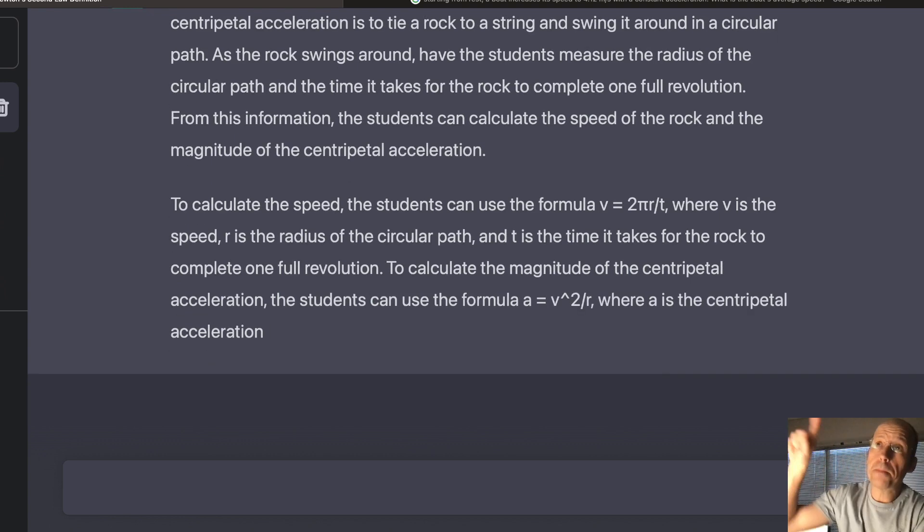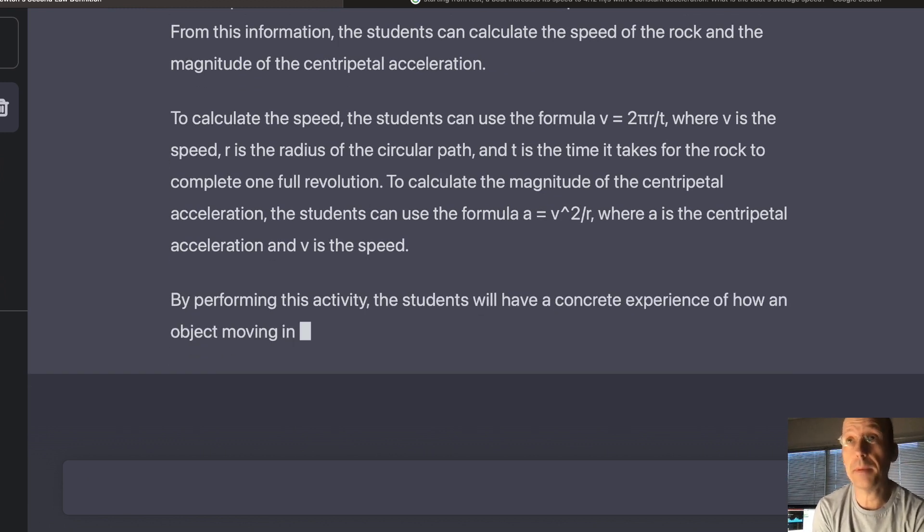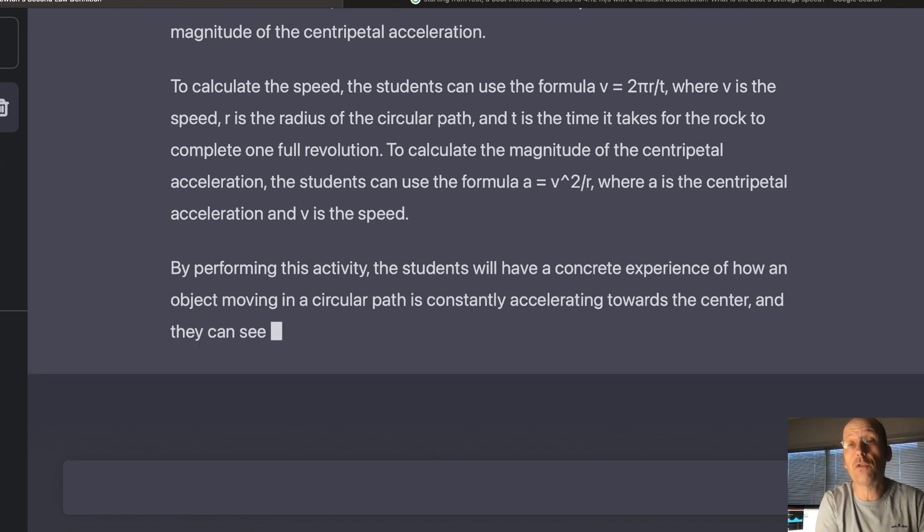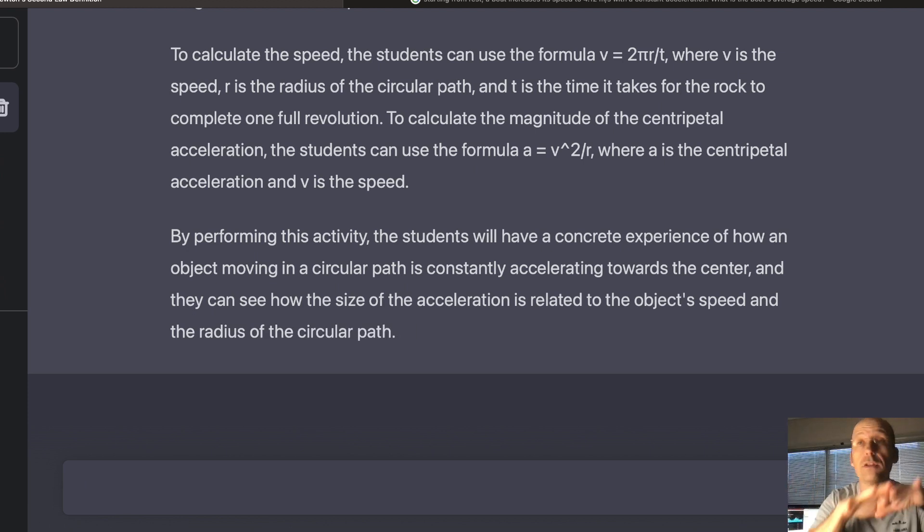Okay. So, there's two problems here. If you're swinging around in a vertical circle, the speed's not going to be constant, because there's gravitational force pulling, speeding it up, slowing it down. If you're spinning around in a horizontal circle, it's not going to be completely flat, unless it's on, like, a frictionless table or something like that. By performance activity, students will have concrete experience of how an object moving in a circular path is constantly accelerating toward the center. I don't see how they do that.